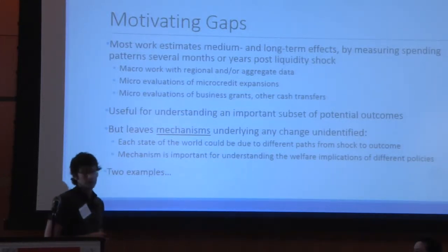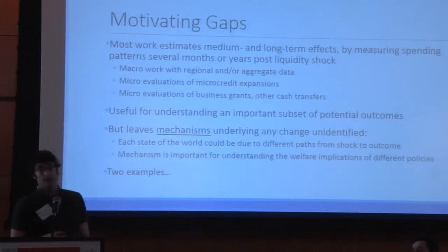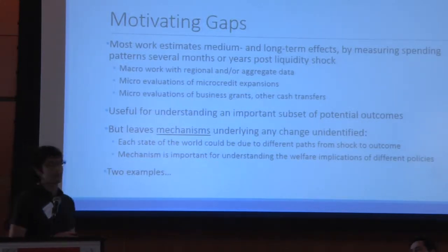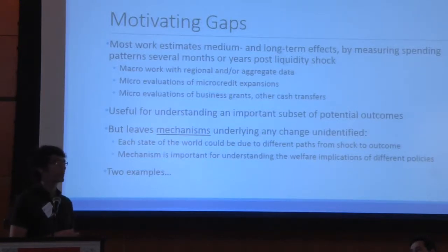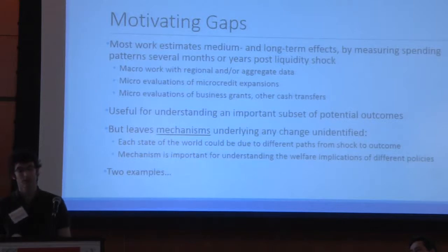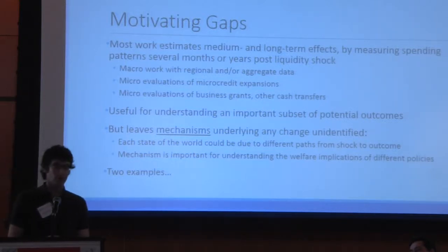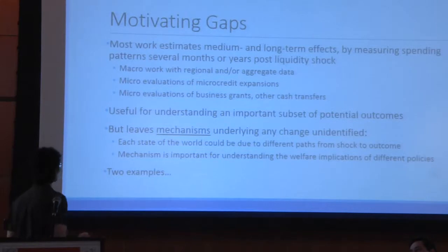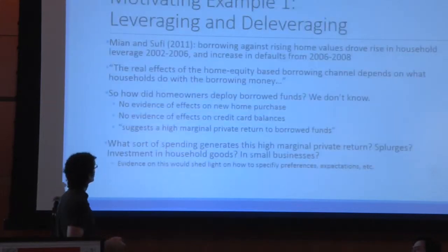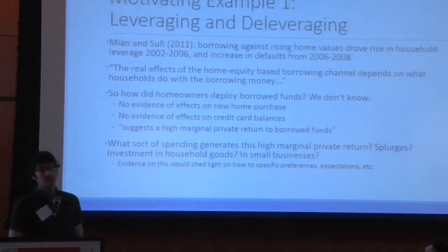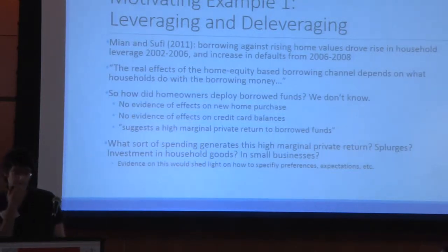This work has certainly been valuable for understanding an important subset of potential outcomes and the implications of spending responses to shocks, but it often leaves the mechanisms underlying any change — the path from shock to the later set of observed outcomes — unidentified. Each state of the world several months or years later could be arrived at via different paths or mechanisms, and different mechanisms can have substantially different welfare and policy implications, to say nothing of implications for which models explain the world best.